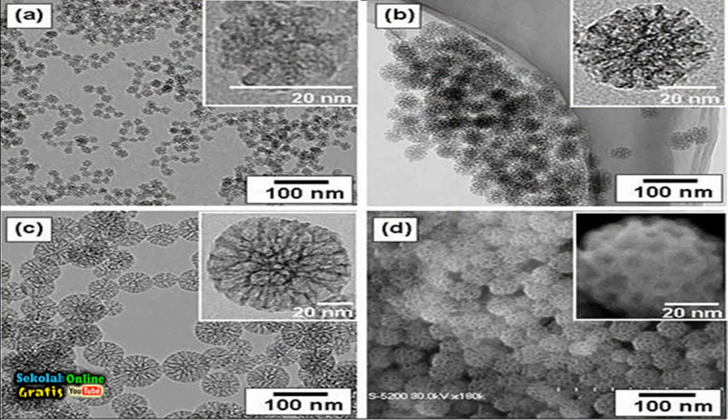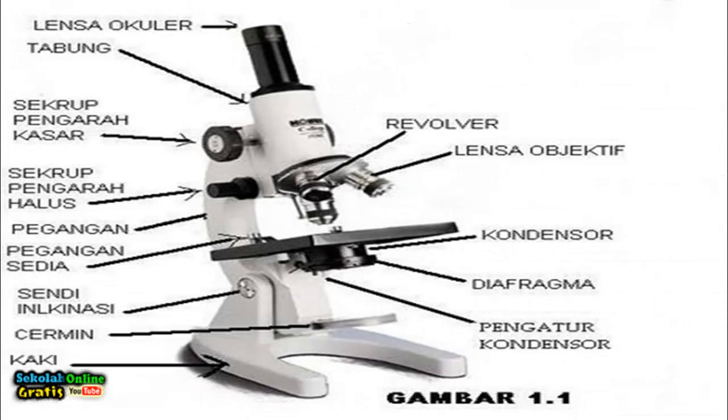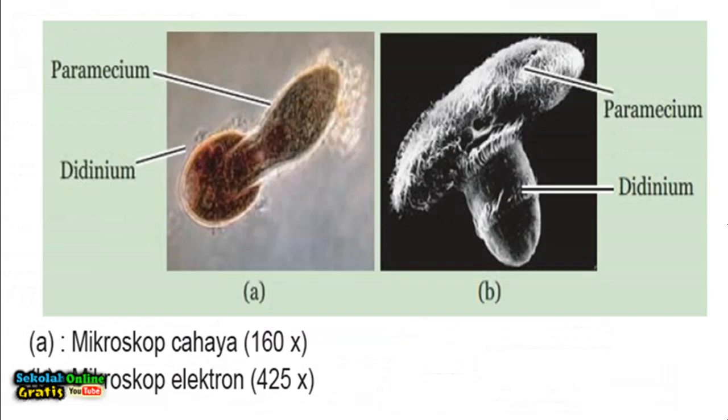Even though the resulting image is black and white it can be artificially colored to emphasize a particular section in detail. In an electron microscope a glass lens is not used but an electromagnetic lens is used to focus the electron beam on the object being observed. The following is an image of a light and electron microscope: light microscope 160 times, electron microscope 425 times.